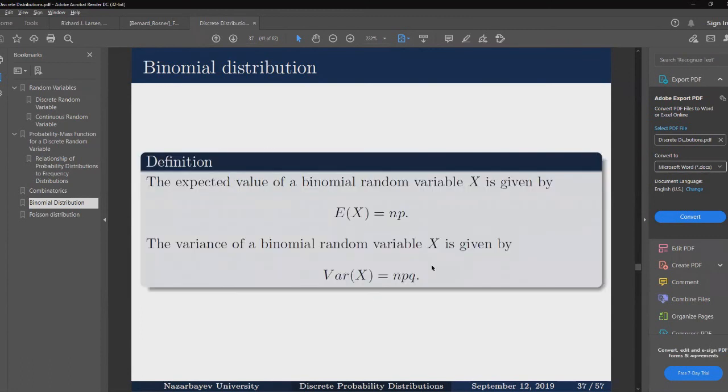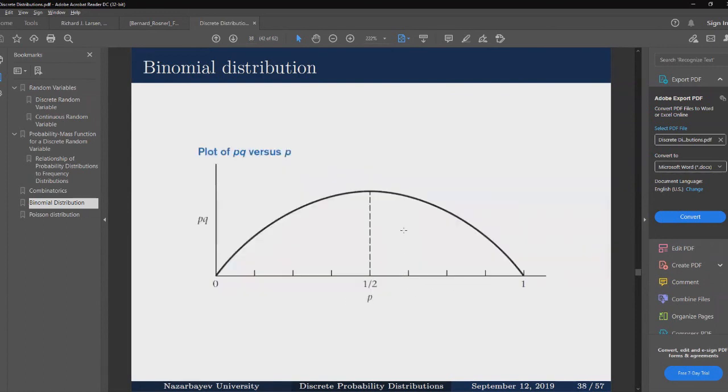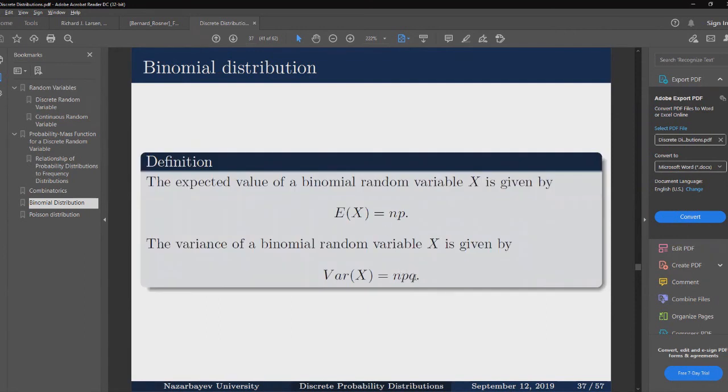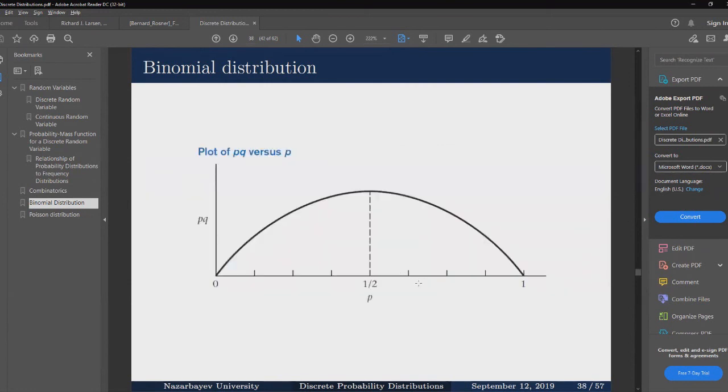Now, if we pay close attention to the variance of binomial random variables, we can see that it's going to attain its maximum value at p equals 1 over 2. Here we have a plot of pq versus p, and the maximum value is at 1 over 2. You can also confirm that by expanding q as 1 minus p, taking the first derivative, equating it to 0, and you'll find the critical value at p equals 0.5.